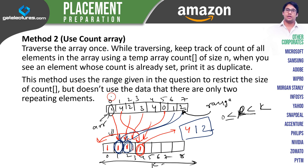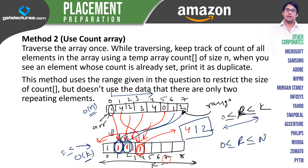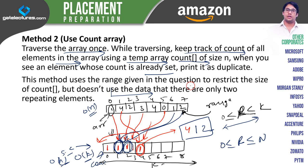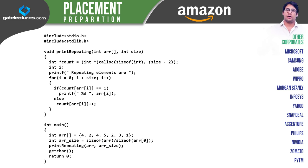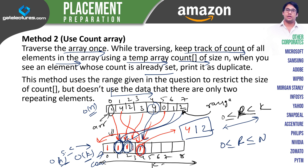For this solution we traverse the array only once, therefore the time complexity is O(n). But the space complexity — if the numbers are from 0 to k, the space complexity will be O(k), or if the range is 0 to n the space complexity is O(n). So it is saying: traverse the array once, keep track of the count of all elements using a temporary count array, and when seeing an element whose count is already set, print its duplicate.